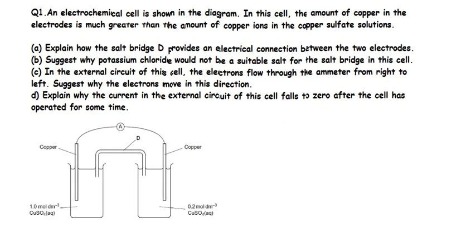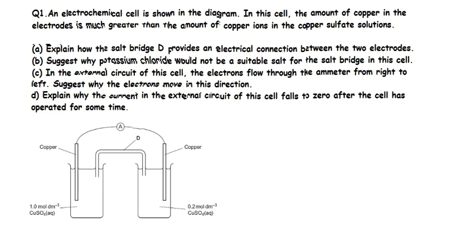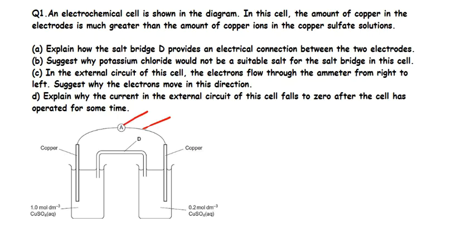Part A explains how the salt bridge D provides an electrical connection between the two electrodes. If you've learned electrochemistry, you understand that this is a wire, that's an ammeter, and through the wire we have movement of electrons. This is a salt bridge. In such a cell we have the cathode and the anode - these are called electrodes.